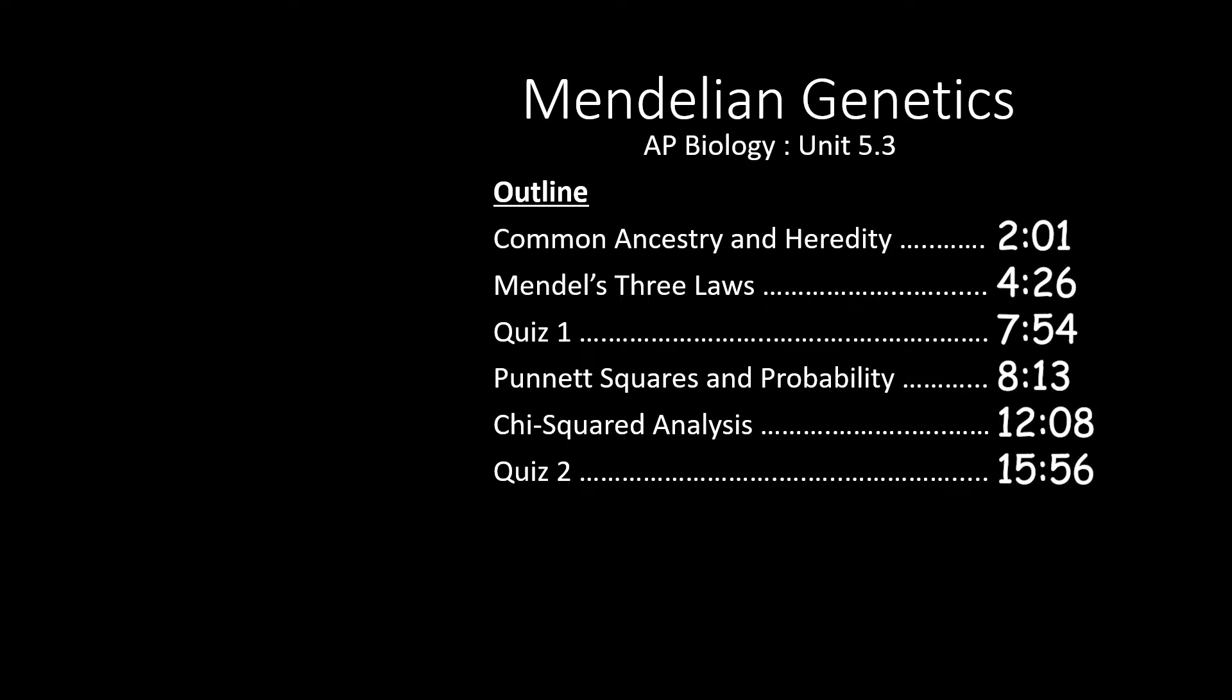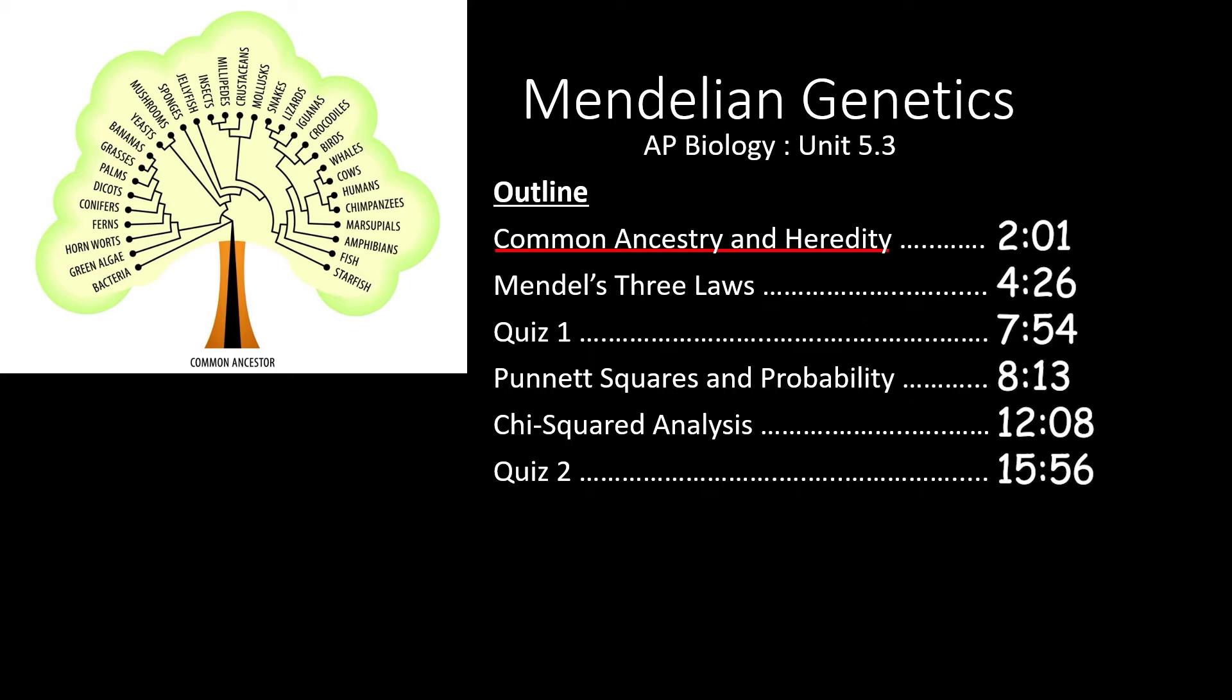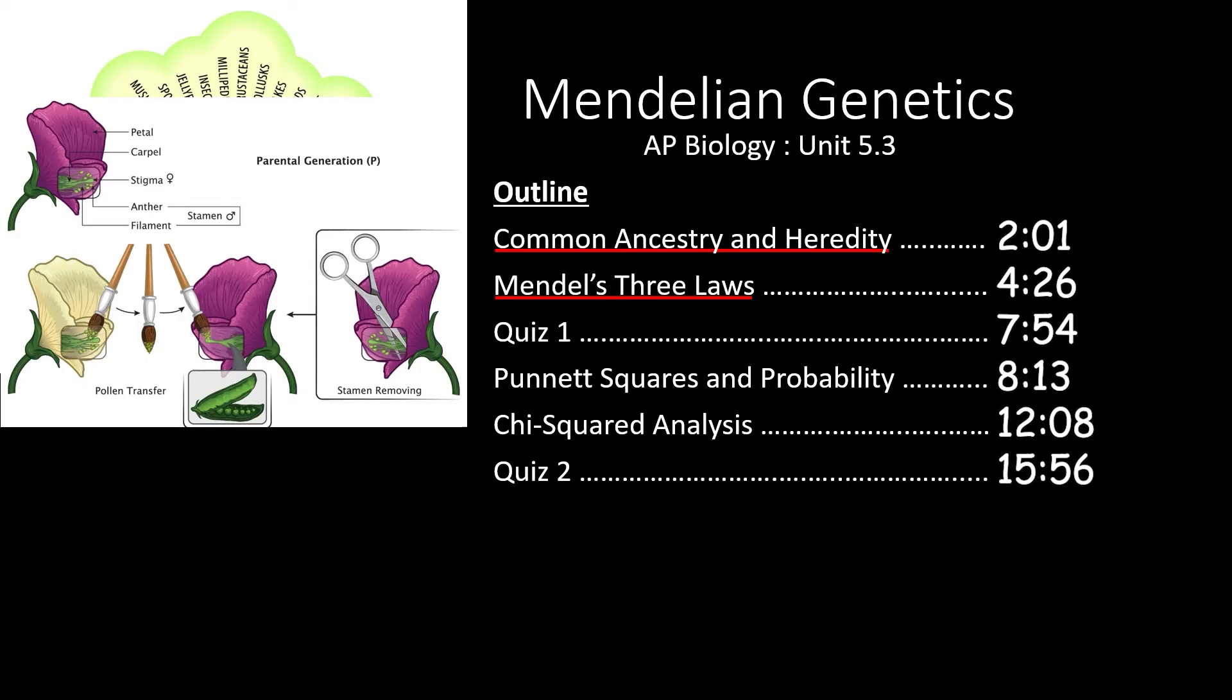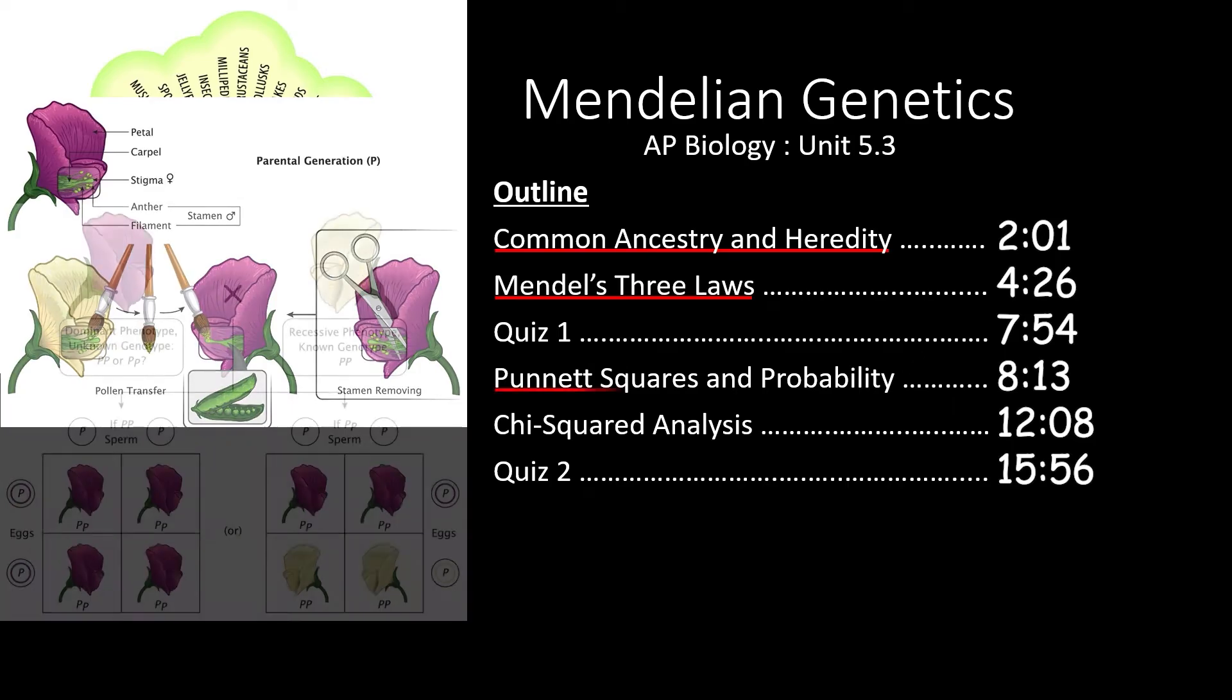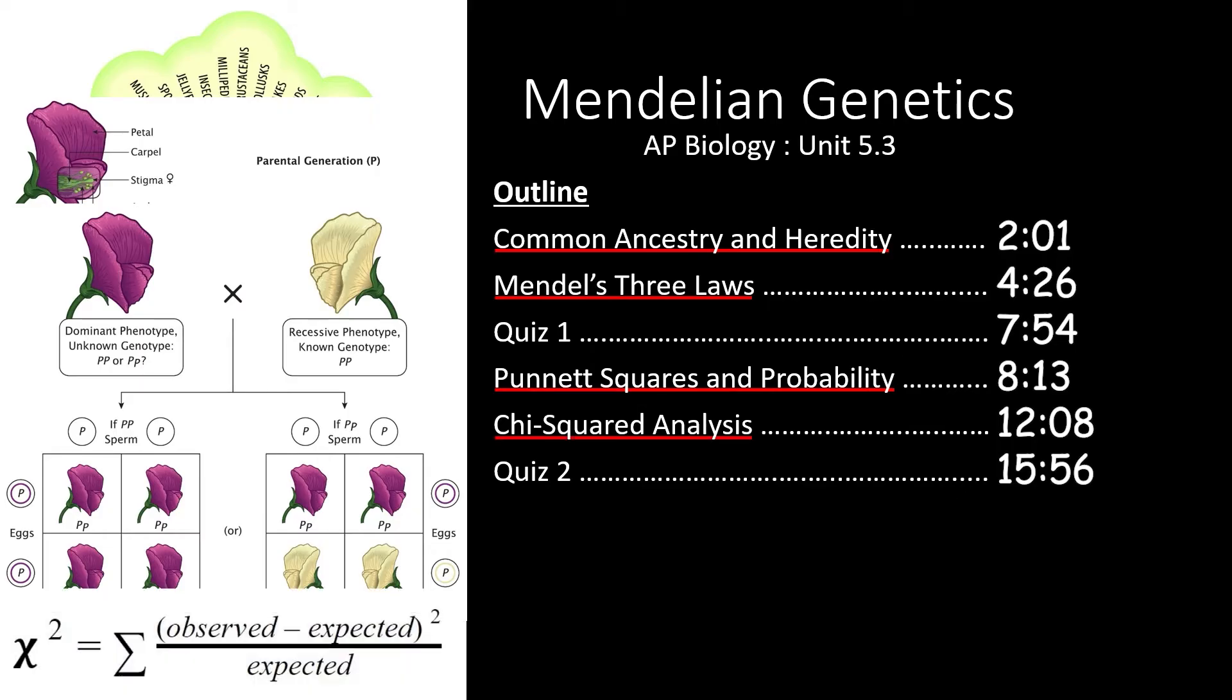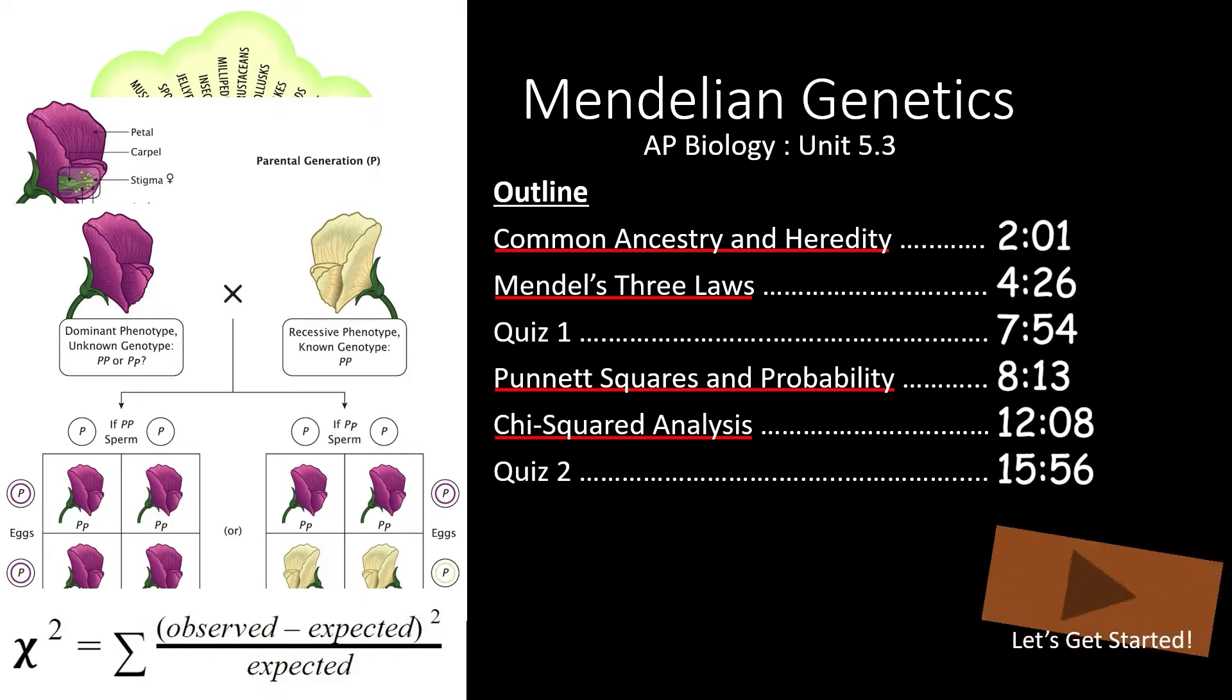In this video, we will cover the concepts from Section 5.3 of the AP Biology Curriculum. We'll start with a review of Earth's common ancestry and heredity. Then, we'll check out Mendel's three laws of inheritance. After the first quiz, we'll see how Punnett squares can be used to predict the outcomes of specific matings. Finally, we'll cover how chi-squared analysis and statistics can be used to determine whether or not observed outcomes support a given hypothesis. If you only need to review one of these sections, feel free to skip forward to the times outlined here. Otherwise, let's get started!